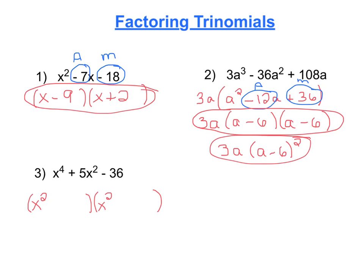Now you still do the same thing. You come up with two numbers that multiply to negative 36 and that add to that middle term, which is 5. So that's a positive 9 and a negative 4. And I know you may be saying, but what about this x squared that's in here? How does that come out to play?